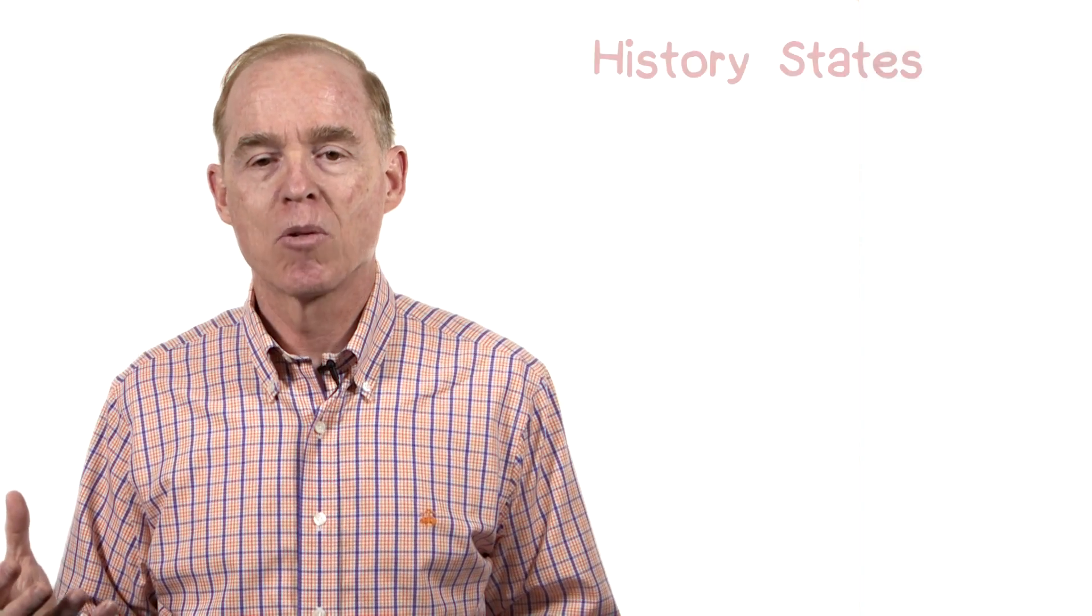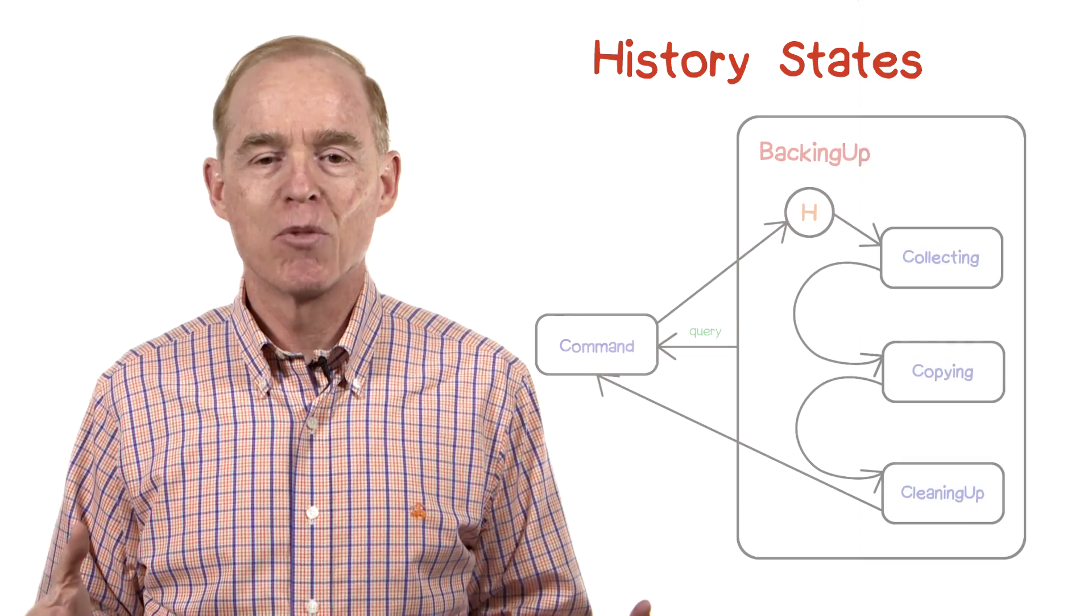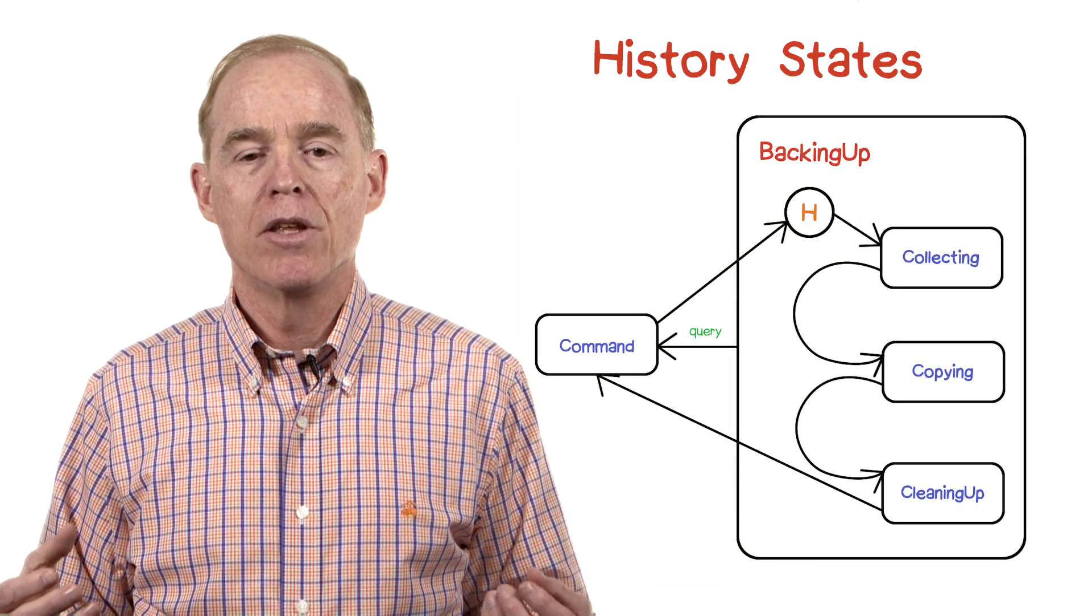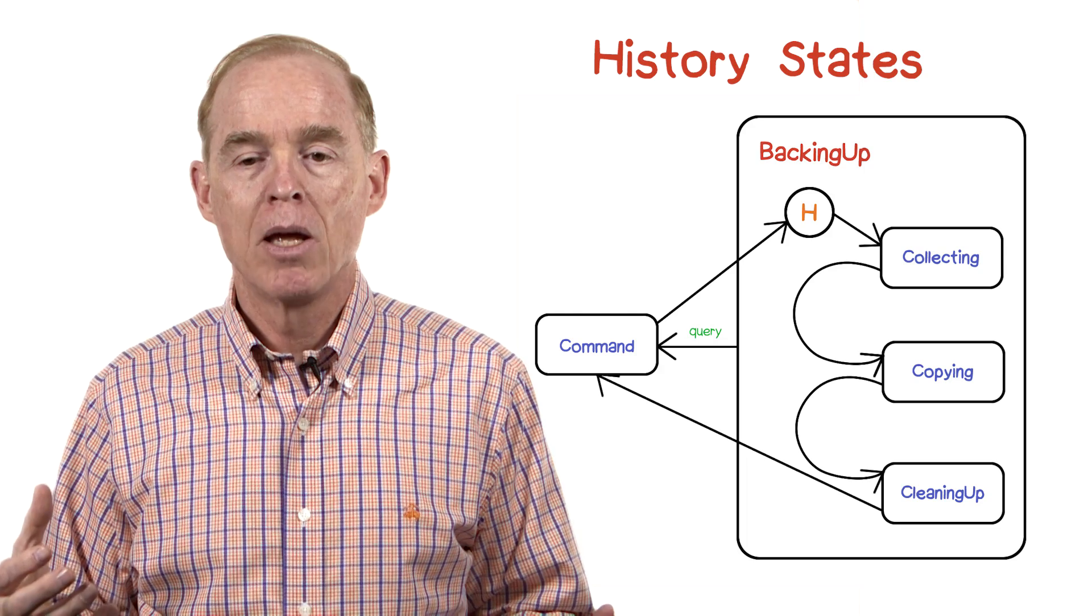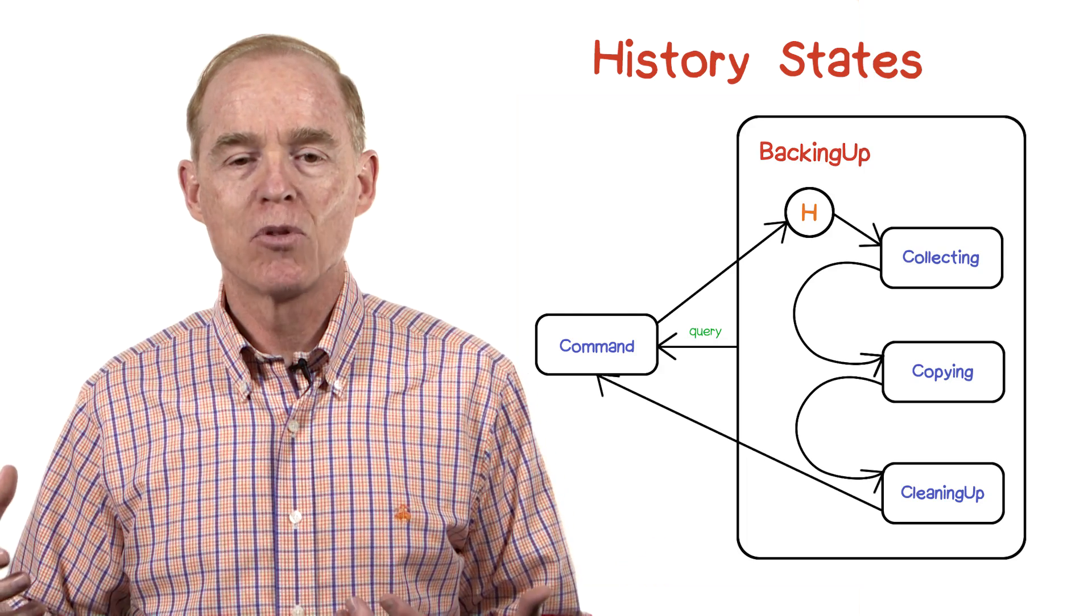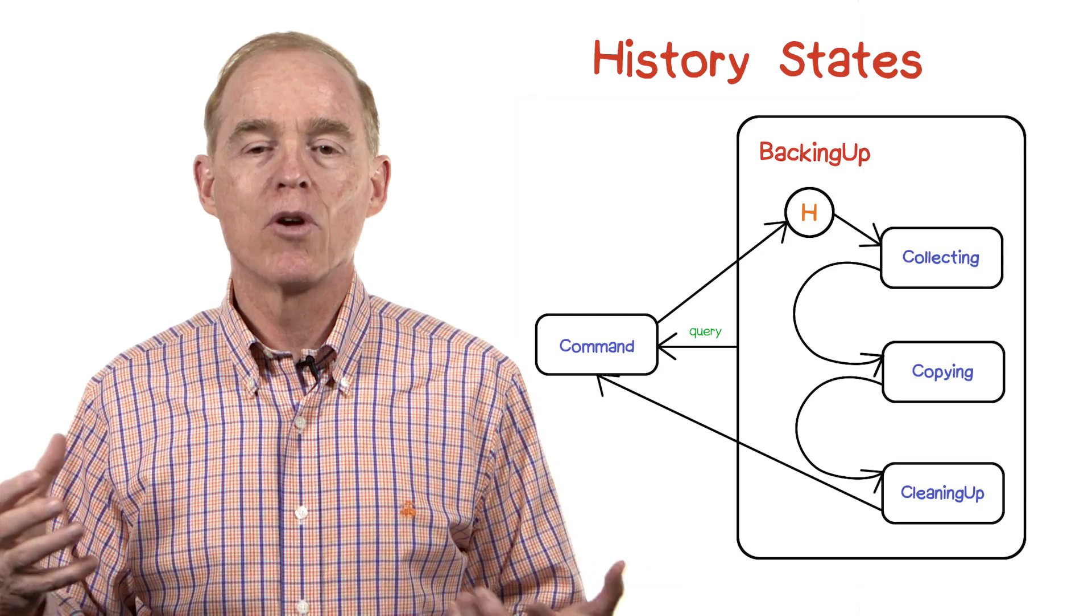The final major feature we want to look at with state charts are called history states. Here's a nested state machine where the two external states are the command state and the backing up state. And there are transitions from the backing up state into the command state, two transitions there.